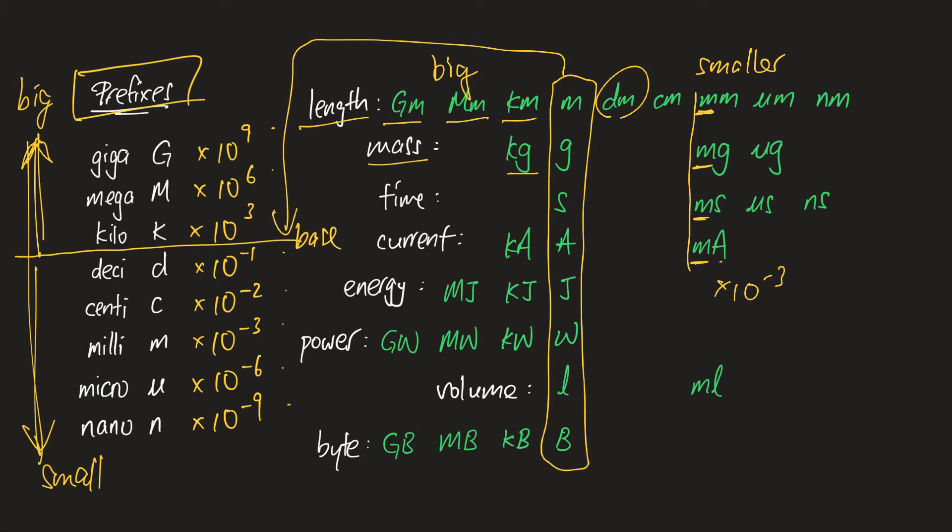So one thing I need you to take note is later when you're going to do conversion—for example, you're converting megameter to meter—you must know that you're converting a bigger unit to a smaller unit. So you need to times. Times what? Whether you times 100, times 1000, or times 1 million, it depends on the prefix.